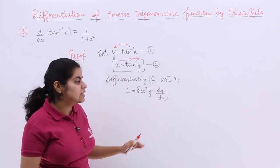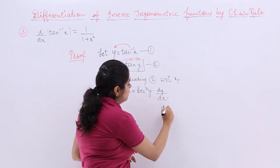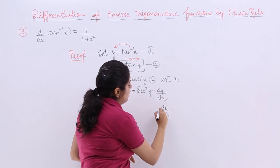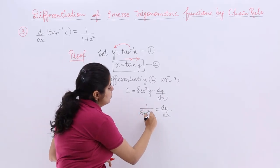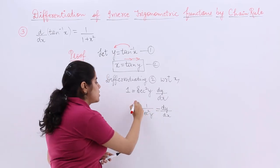Now dy by dx will stay here. And 1 upon secant square y comes here. So it is 1 upon secant square y, and that is put in a box.